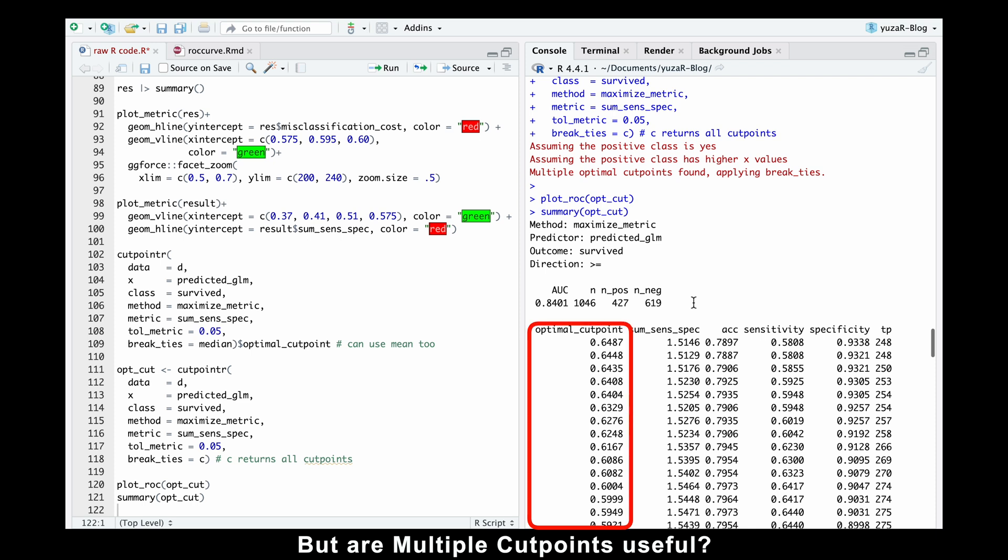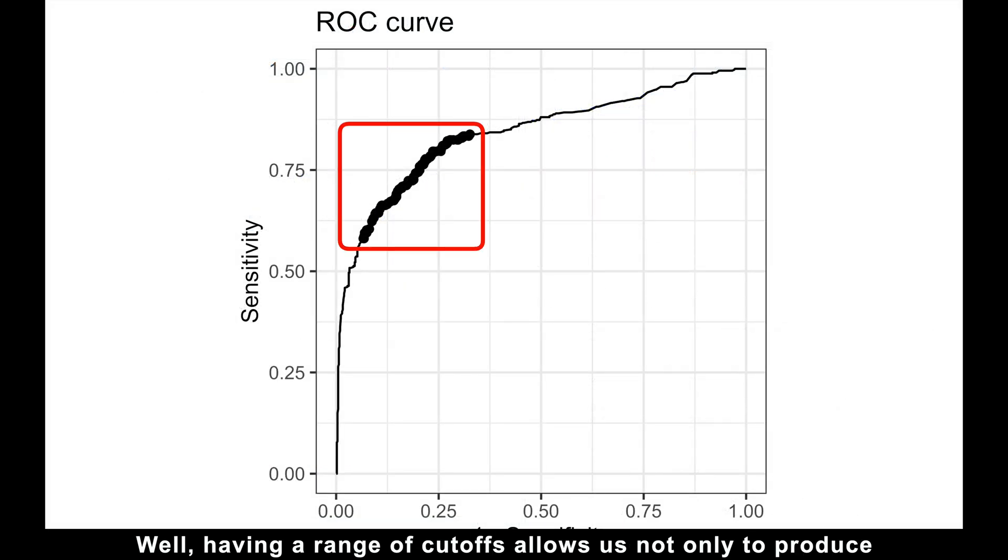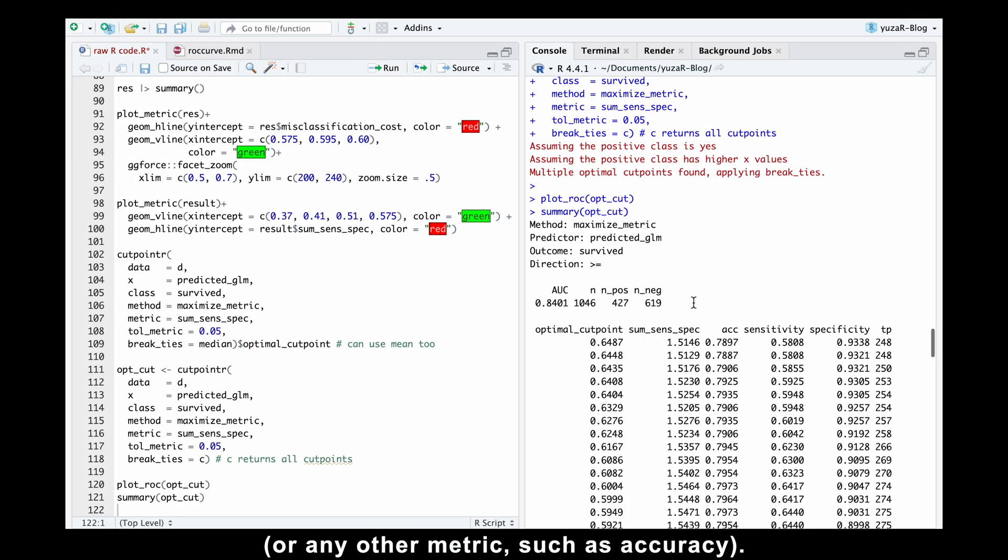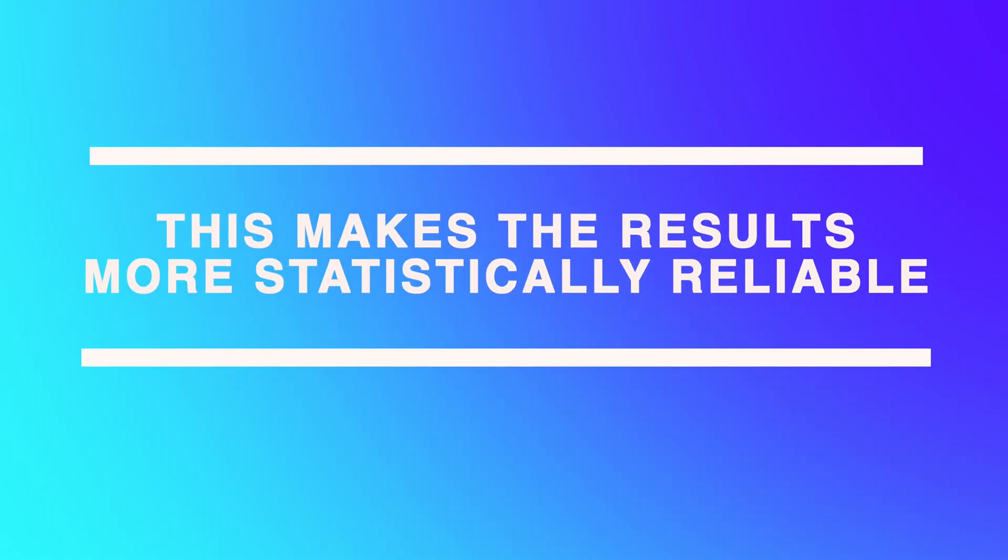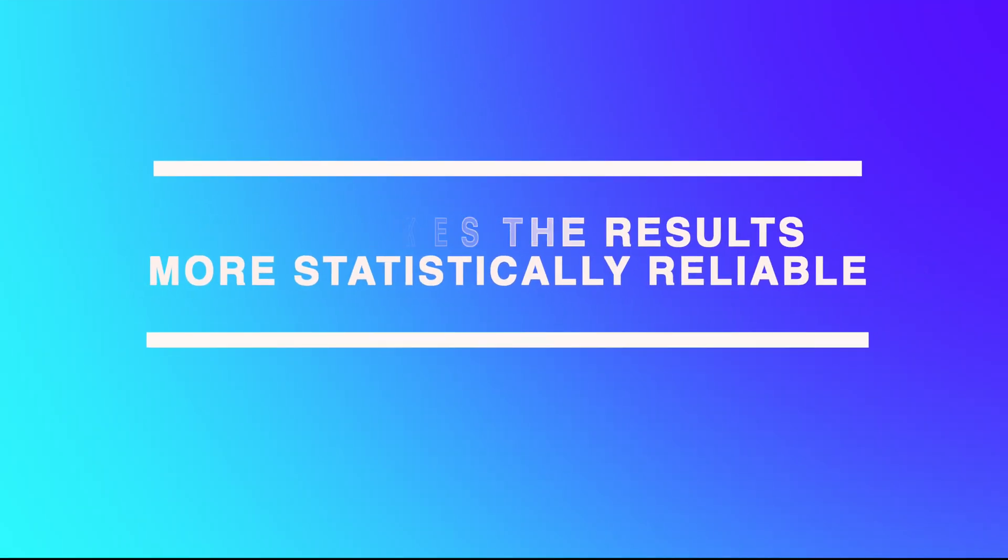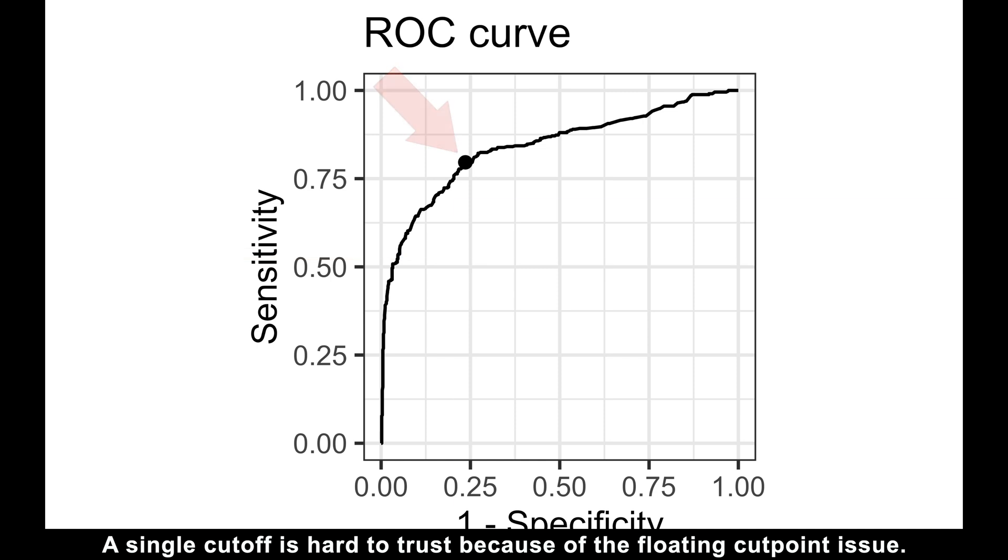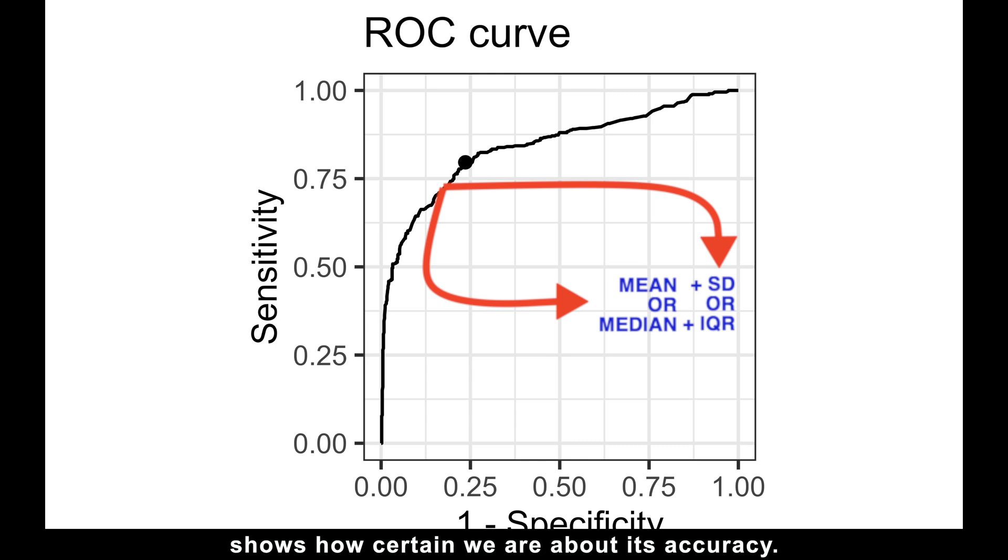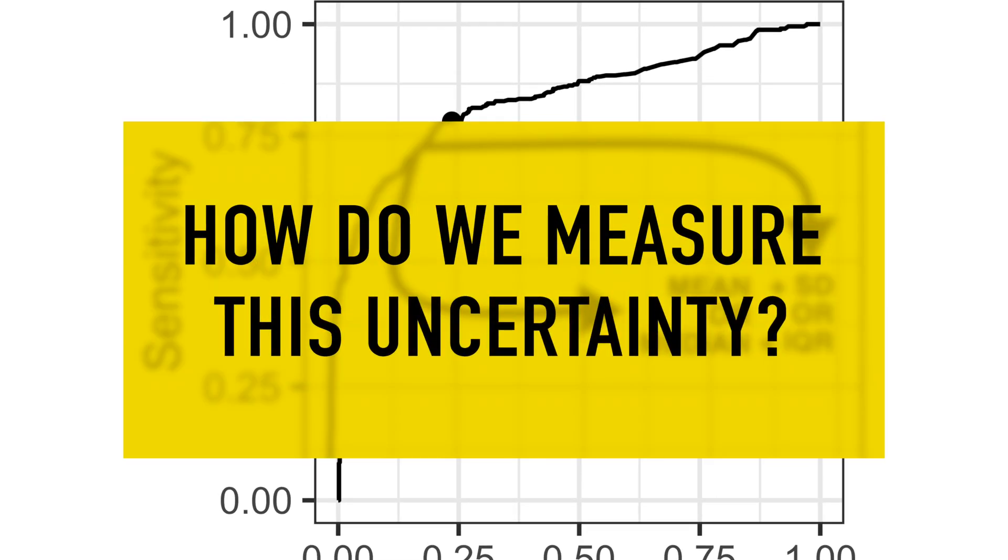Well, having a range of cutoffs allows us not only to produce a more robust median or average cutoff, but also lets us add a measure of uncertainty, like standard deviation or interquartile range to our cutpoint, or any other metric, such as accuracy. This makes the results more statistically reliable. Think about it. A single cutoff is hard to trust because of the floating cutpoint issue. But a cutoff with confidence intervals shows how certain we are about its accuracy. So, how do we measure this uncertainty?